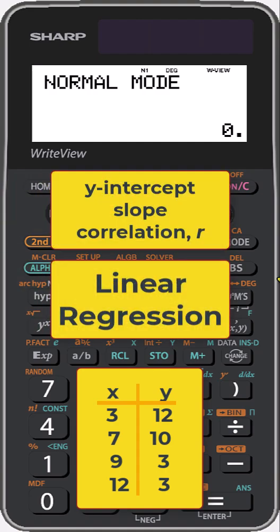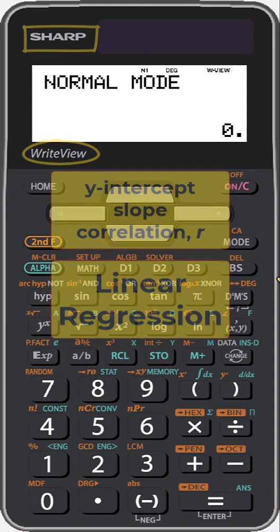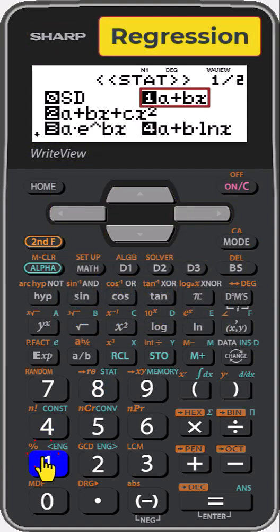To generate linear regression statistics on the Sharp ELW Series Calculator, start by pressing MODE, then 1 for start. Select A plus BX by pressing 1.